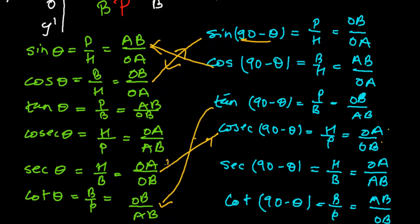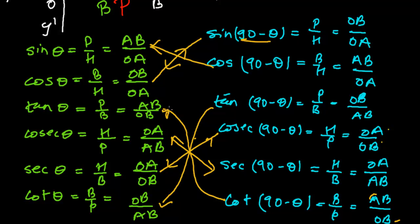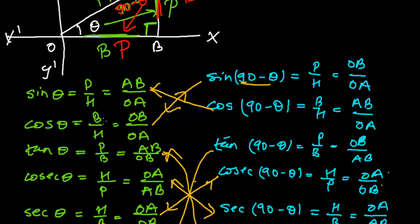Continuing the relationships: Sec(90−θ) = OA/AB, which matches cosec θ = OA/AB. So sec(90−θ) = cosec θ. Cot(90−θ) = AB/OB, which matches tan θ = AB/OB. So cot(90−θ) = tan θ. These are all six trigonometric ratios of complementary angles and their relationships with each other.